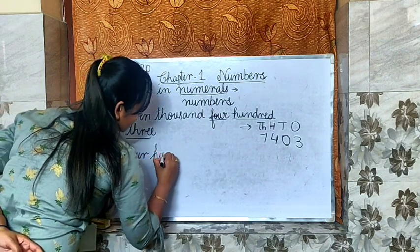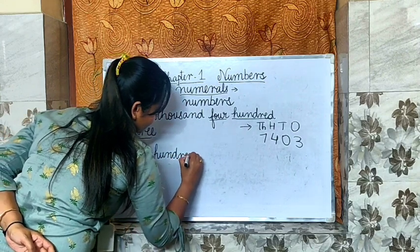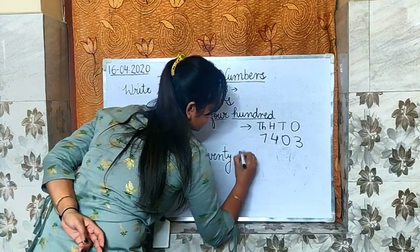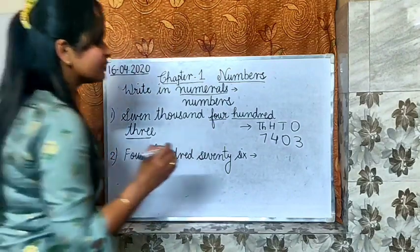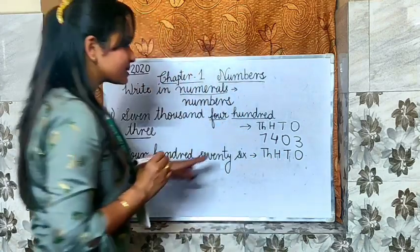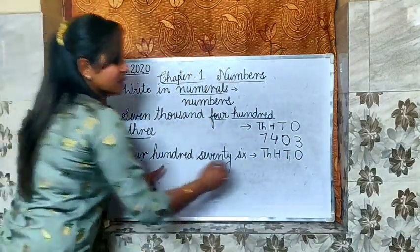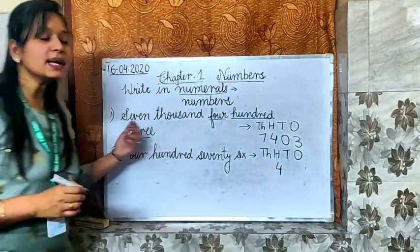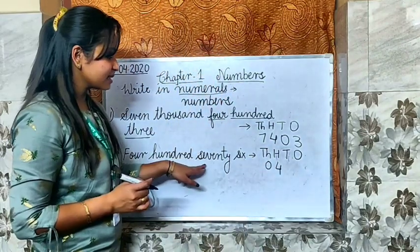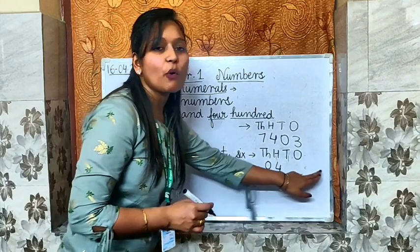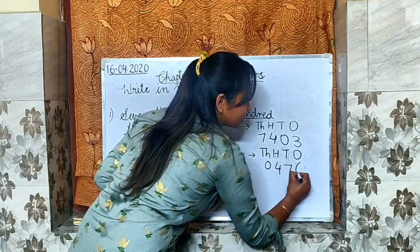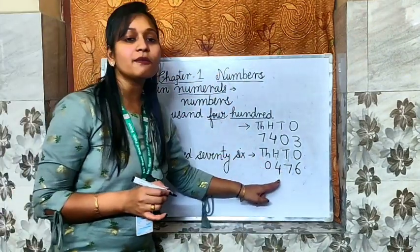Next example: 4 hundred, 70, 6. So again we will first write our 1s, 10s, 100, 1000. Now start writing: 400 — so who is sitting on 100 place? 4. But who is sitting on 1000 space? Nobody, so we write a 0. Then it is 76 — I told you, always write last two numbers together, and it is 76. So our number is 0476, which is simply 476, because 0 doesn't have a value when it comes at the start.